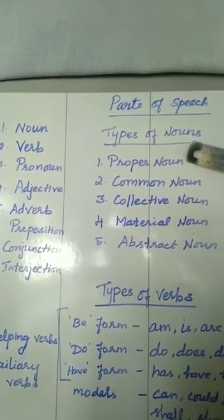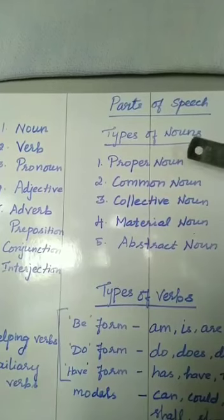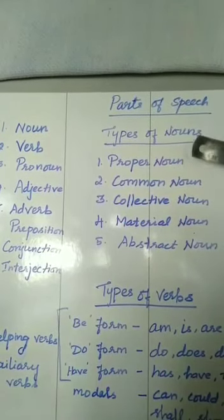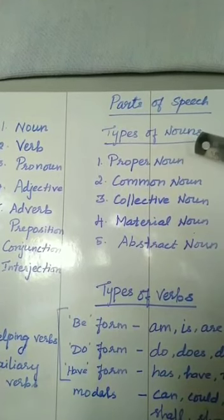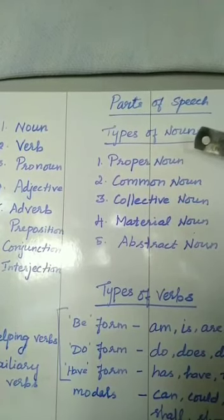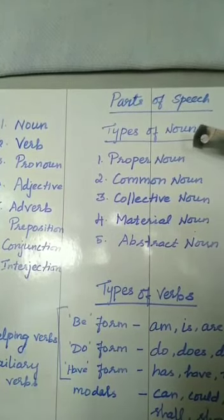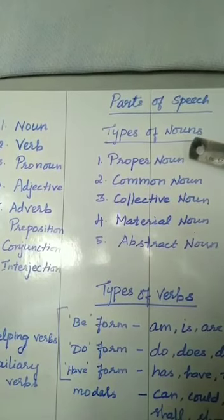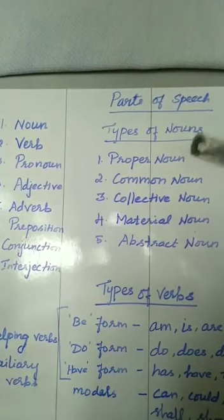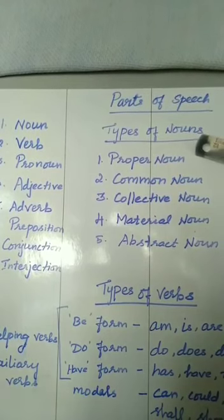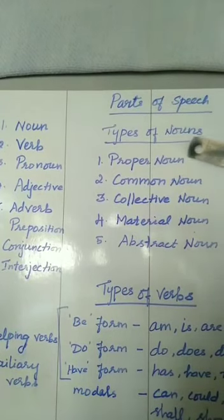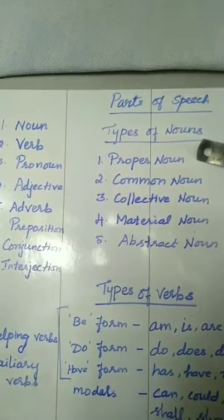Now we can see what is a proper noun. A noun which denotes a person, thing, or a place in particular — if a noun is denoted in particular, we call it a proper noun. For example: Muttu, Stephia, Femina, India. All such things, when we name them in particular, it is called a proper noun.